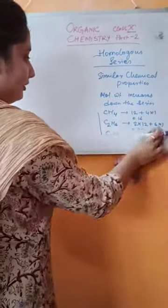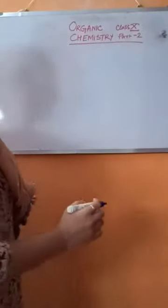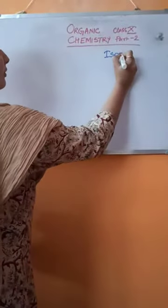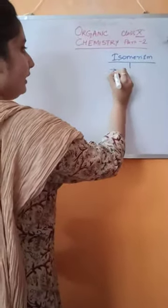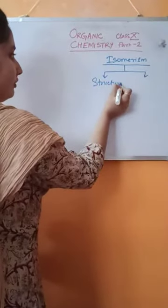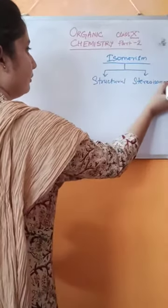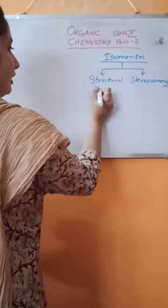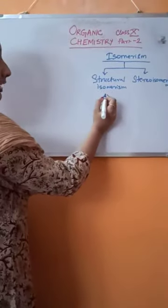These are generally the basic concepts of homologous series. Now I will come to isomerism. There are mainly two types of isomerism: structural isomerism and stereoisomerism.